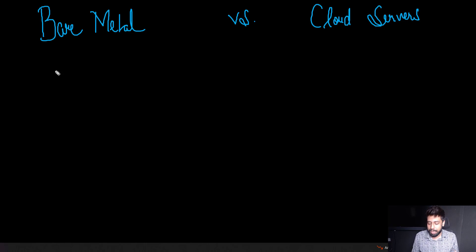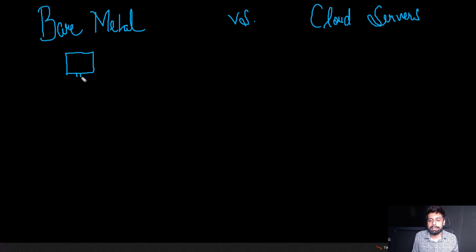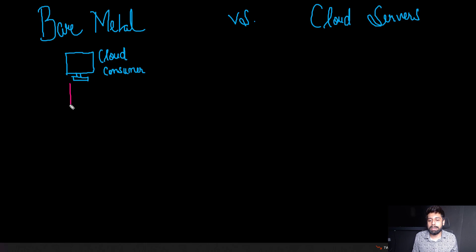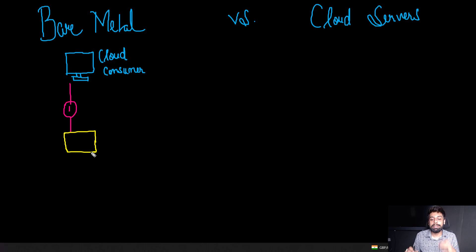I'll make a quick representation so you can understand better. Suppose this is a quick representation of the complete mapping of a bare metal server. This is you — the cloud consumer. This is where the chain begins in bare metal technology. First, it goes to step one: the central deployment system, which is responsible for giving responses to users.